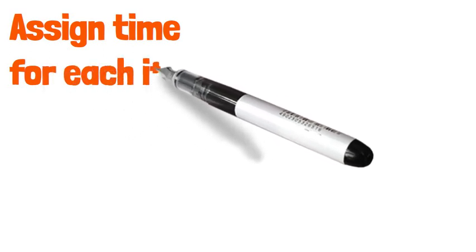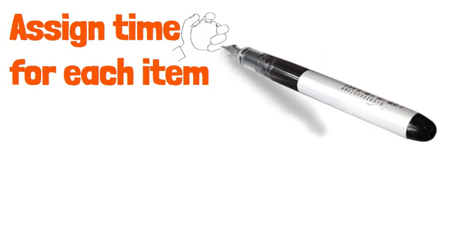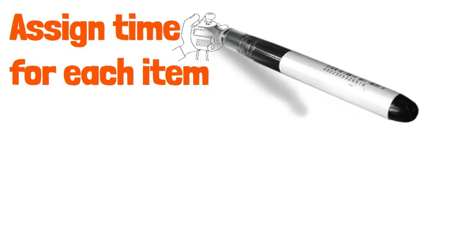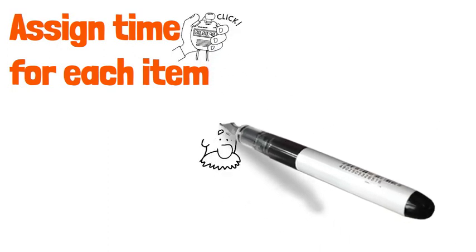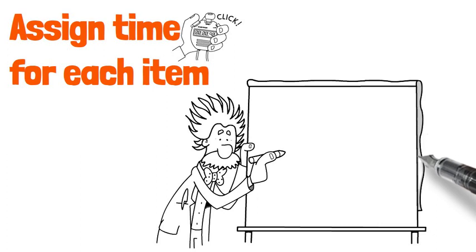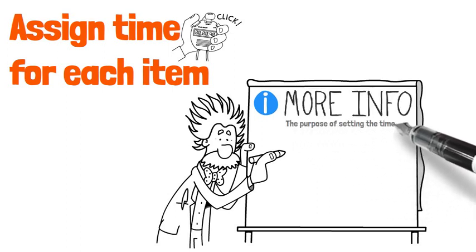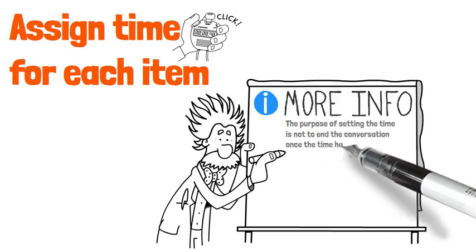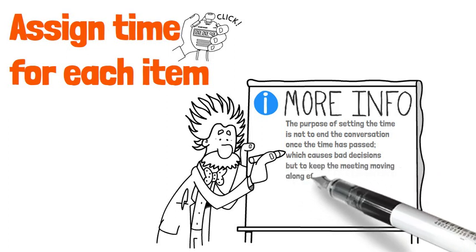Seventh, assign a time for each item. Having an estimate of the time needed for each agenda item serves two functions. Firstly, it encourages you to estimate how long it will take to bring up the subject, answer questions, deal with different points of view, develop potential solutions and make a plan of action. Be aware that the time taken is often underestimated. Secondly, the estimated time can help attendees adjust their comments to fit the time frame or suggest that extra time may be necessary. The purpose of setting the time is to keep the meeting moving efficiently and on track, not to cut off conversation prematurely.